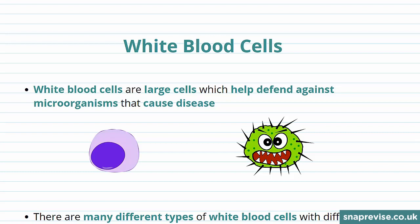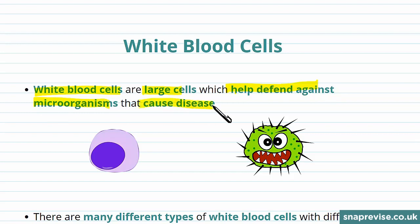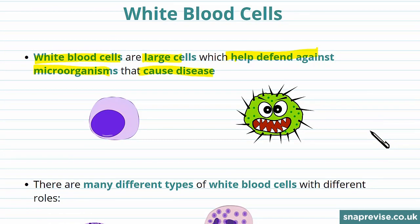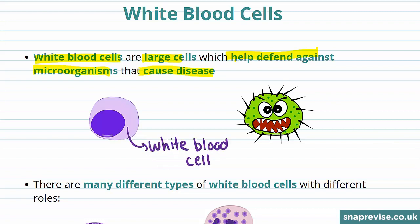Now let's talk about another component of the blood: white blood cells. White blood cells are large cells. They form part of the immune system and help defend against microorganisms that cause disease — these are called pathogens. This is an example of what one white blood cell might look like, and these white blood cells help destroy and defend against pathogens.